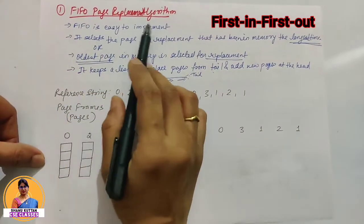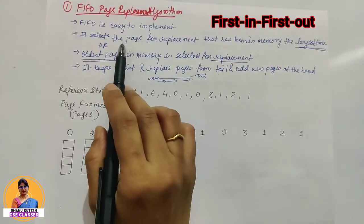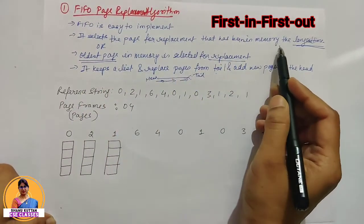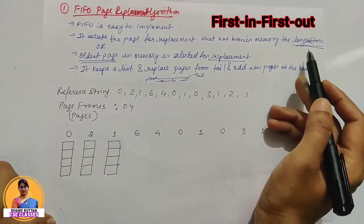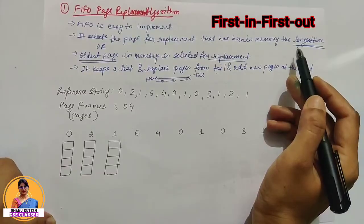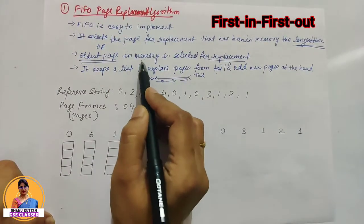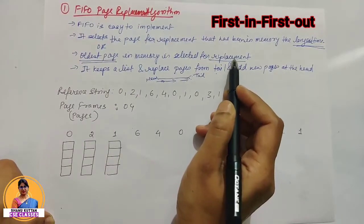First, FIFO page replacement algorithm is easy to implement. It selects pages for replacement that has been in memory the longest time. In other words, the oldest page in memory is selected for replacement.